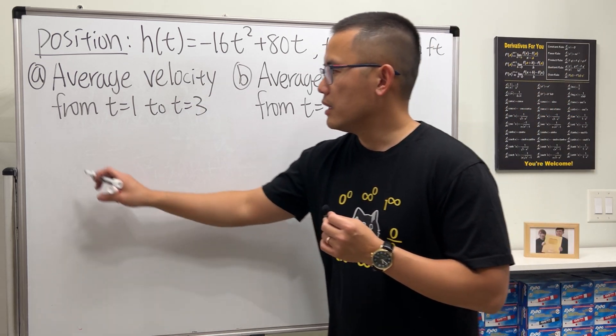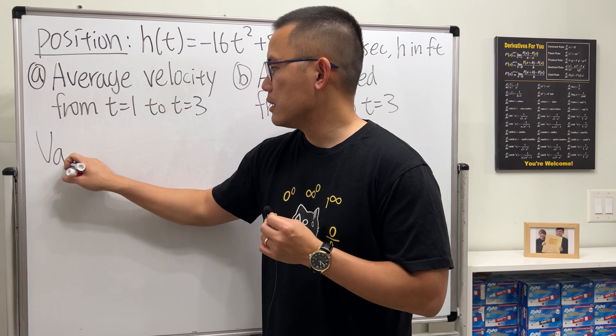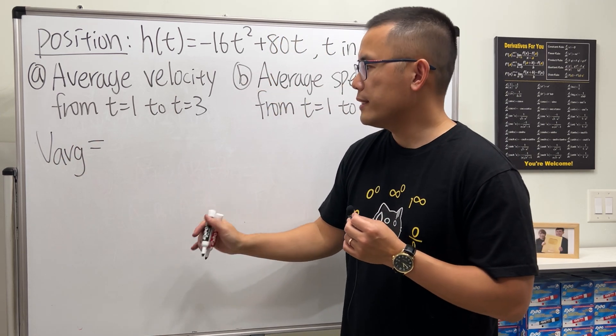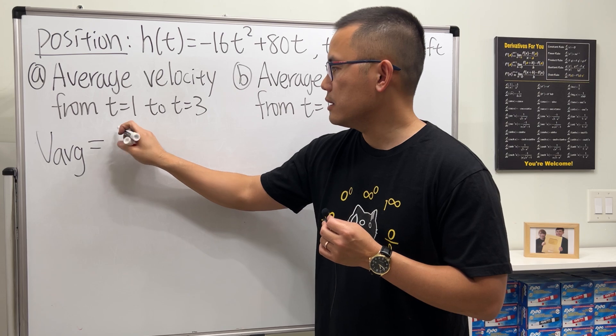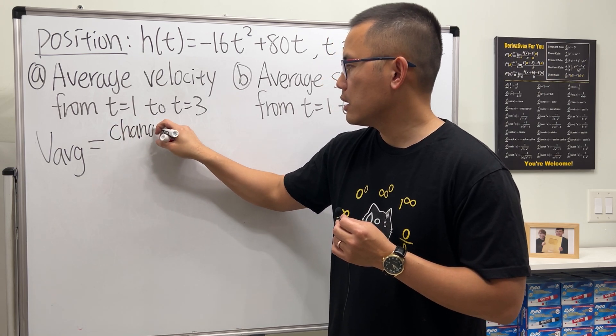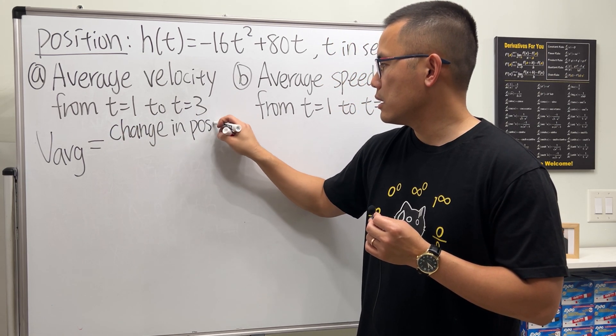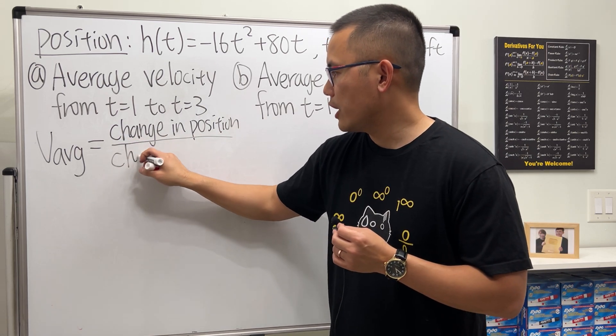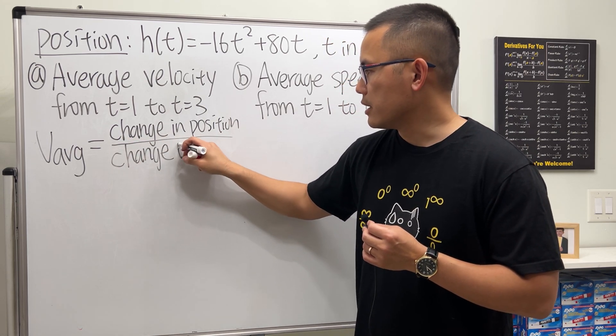Let's talk about how to find the average velocity first. It's always going to be this: average velocity equals change in position over change in time.